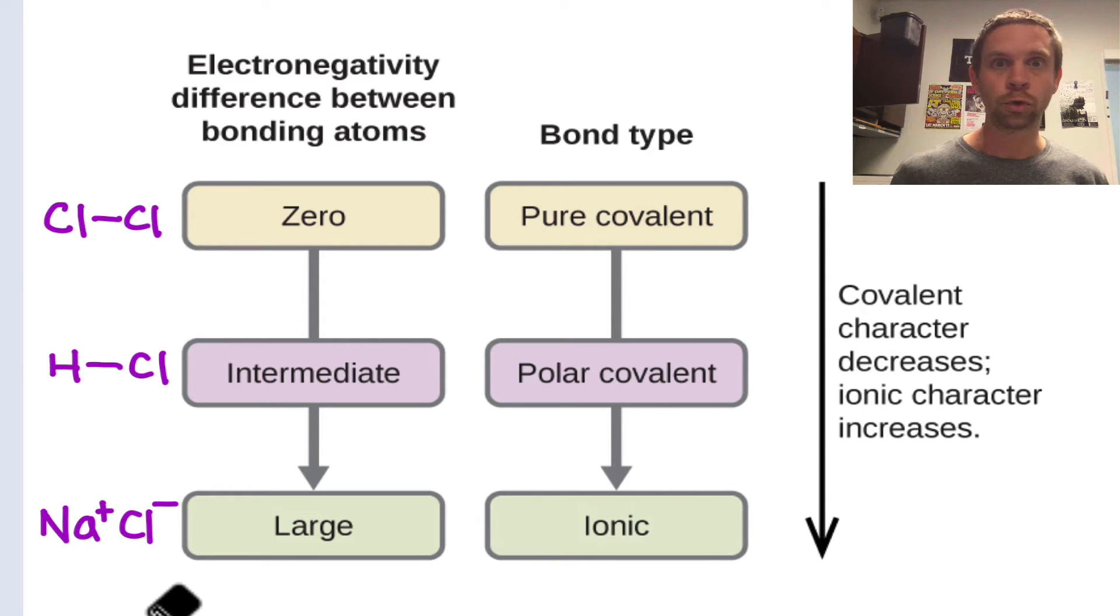A good example is sodium chloride, which is really not a covalent compound at all. It's Na+ and Cl-, and the origin of this is the very large electronegativity difference between the metallic sodium and the non-metallic chlorine.